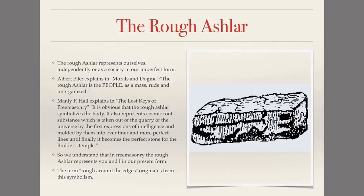Manly P. Hall explains in The Lost Keys of Freemasonry: it is obvious that the rough Ashlar symbolizes the body. It also represents the cosmic root substance which is taken out of the quarry of the universe by the first expressions of intelligence and molded by them into ever finer and more perfect lines until finally it becomes the perfect stone for the Builder's Temple.